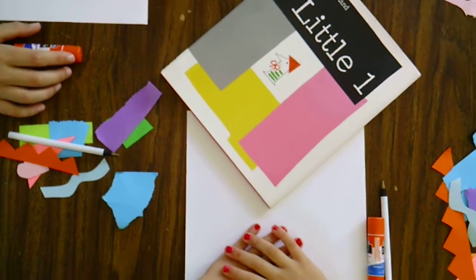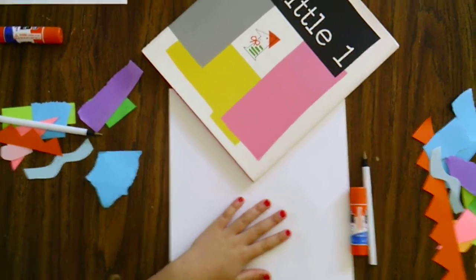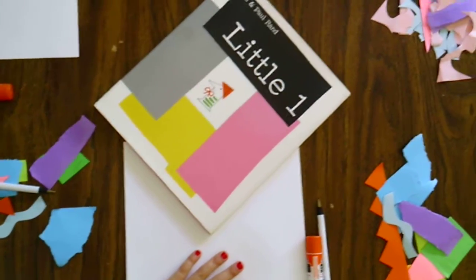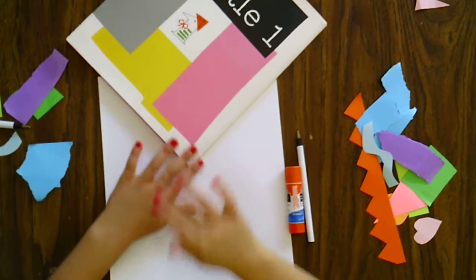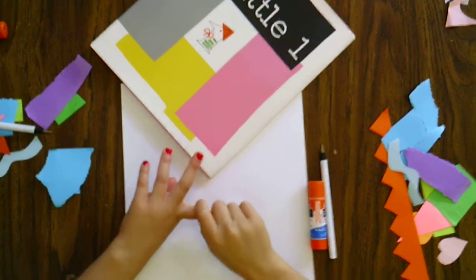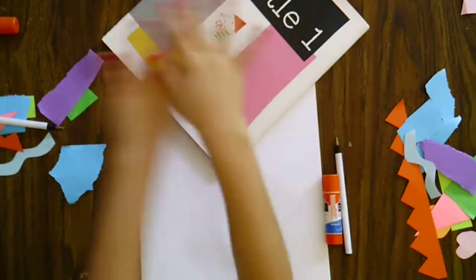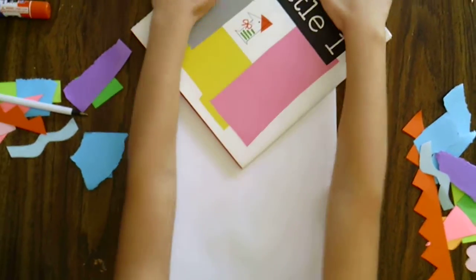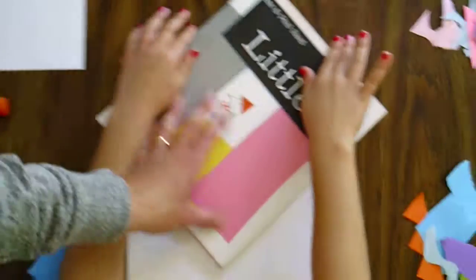Hi everyone, we're back again and Evie's laughing at us. We are starting our project inspired by Little One. What we're going to do today is glue scrap paper onto another paper and then we're going to draw with lines.